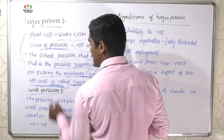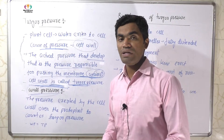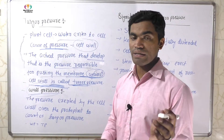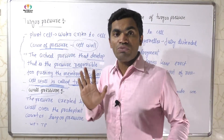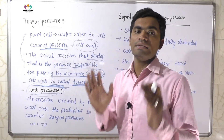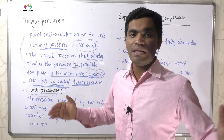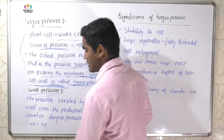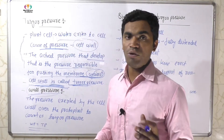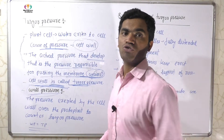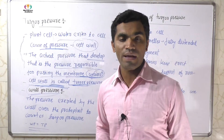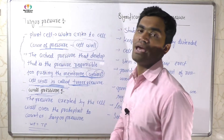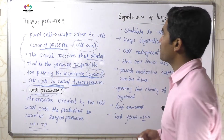The second is wall pressure. Wall pressure is different from and opposite to turgor pressure. The cytoplasm water gives pressure to the wall, and the wall gives pressure back to the cytoplasm. Both pressures are similar in value but opposite in direction. The value of turgor pressure and wall pressure is the same, but the directions are opposite.